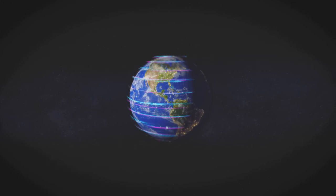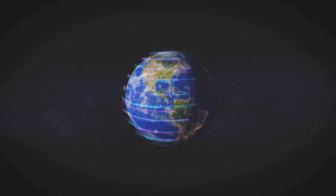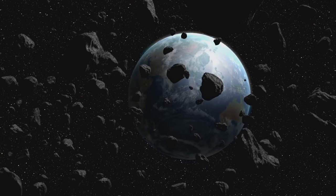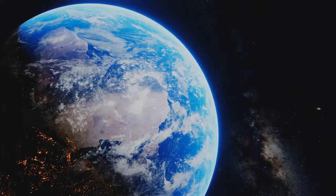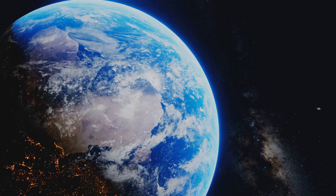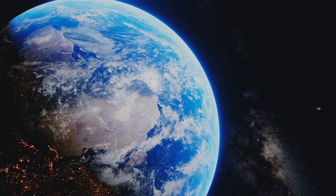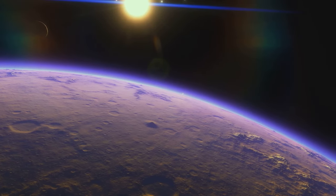At first glance, Earth and Gliese 581c seem like distant cousins. Both are rocky planets orbiting a star, but that's where the similarities end. Earth is a vibrant blue and green oasis teeming with life, while Gliese 581c is a more mysterious entity. We can only speculate about its surface features and potential for life.